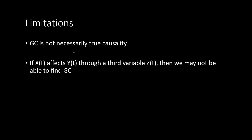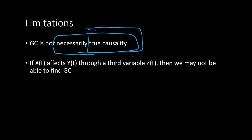There are some limitations of Granger causality. First, Granger causality is not necessarily true causality — we must not confuse Granger causality with true causality. Second, if Xt affects Yt through a third time series variable Zt, then we may not be able to find the Granger causality even though Xt Granger causes Yt, because it is happening through the third variable. In that case, the Granger causality test described earlier will not be able to detect it. That is another weakness of Granger causality.